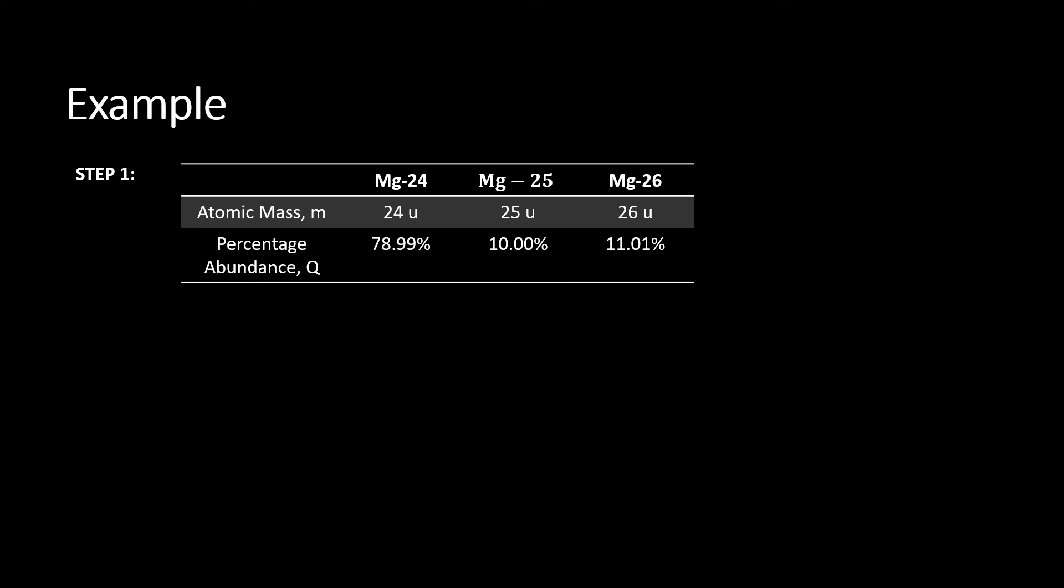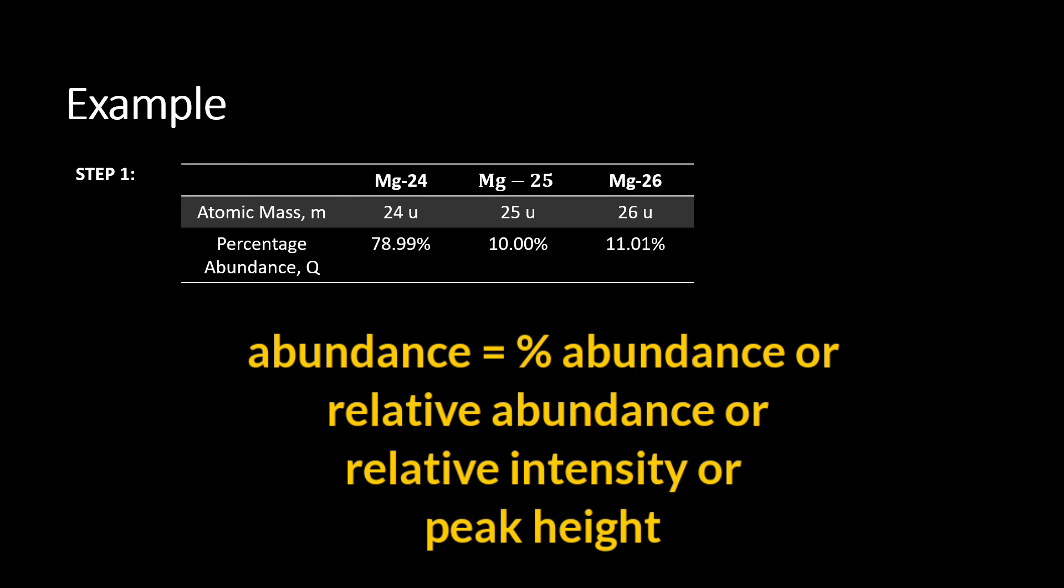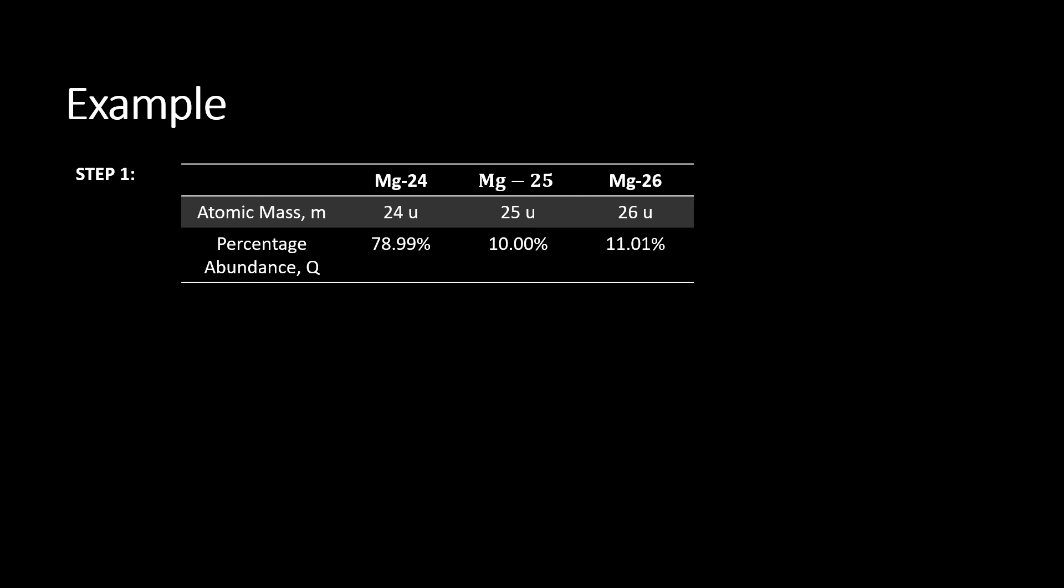And for abundance, in this example, it is given percentage abundance. So we record down the percentage abundance of each isotope. But must remember, in the mass spectrum, not necessarily all the time being given percentage abundance. It can give in terms of relative intensity or even the peak height. But whether it is relative intensity or peak height, they are all considered as abundance. So it can be written down in the abundance row.